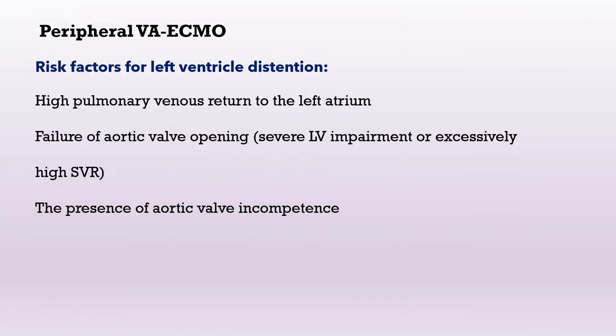What are the risk factors for left ventricular distension, or how can we predict increasing afterload? Risk factors include high pulmonary venous return to the left atrium and failure of opening of the aortic valve. This can occur with severe left ventricular impairment or excessively high systemic vascular resistance. The presence of aortic valve incompetence or aortic regurgitation can also be a predictor for left ventricular distension.